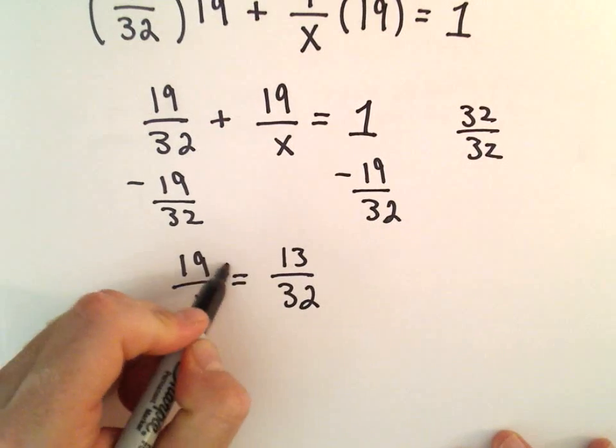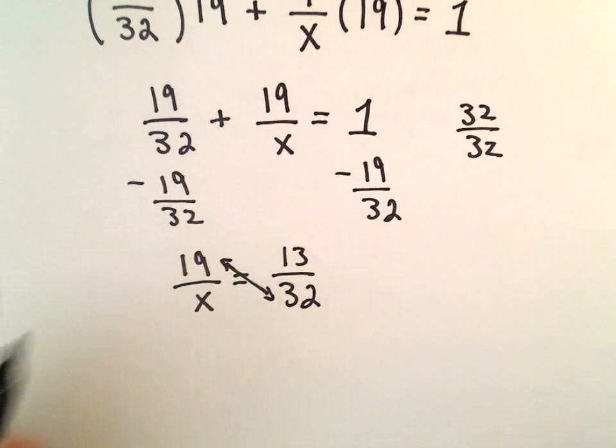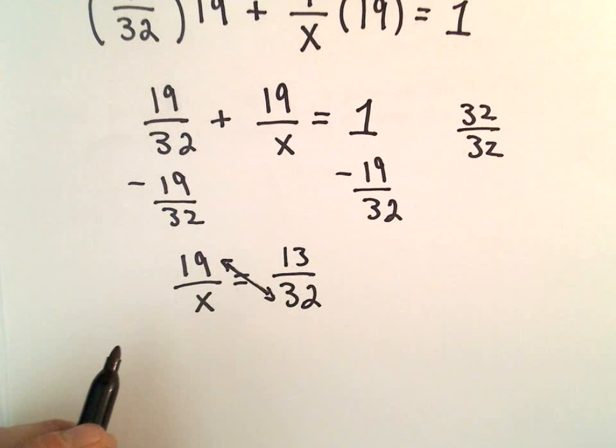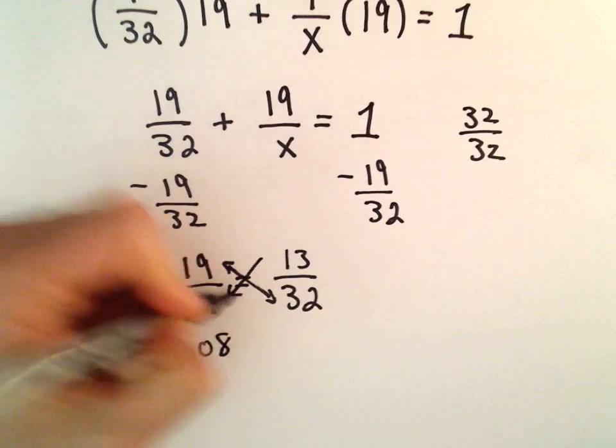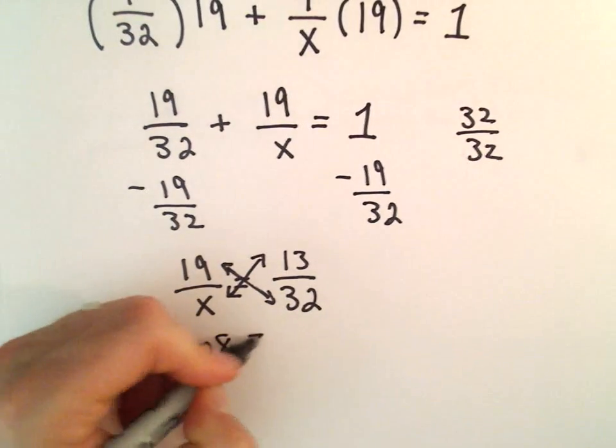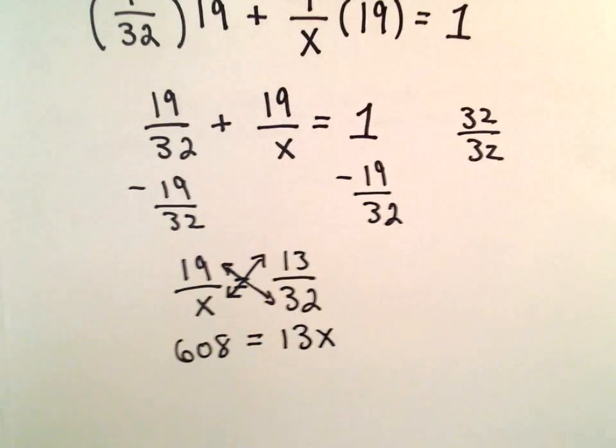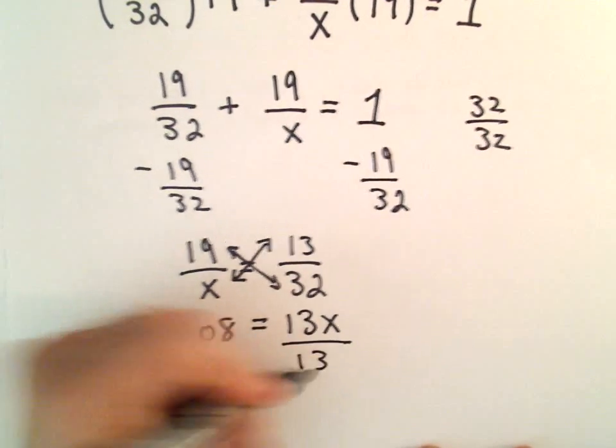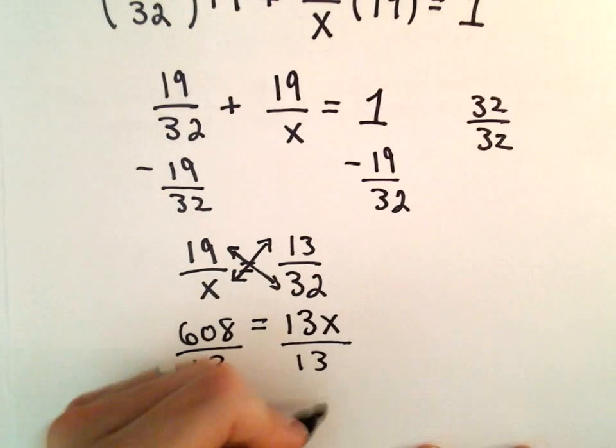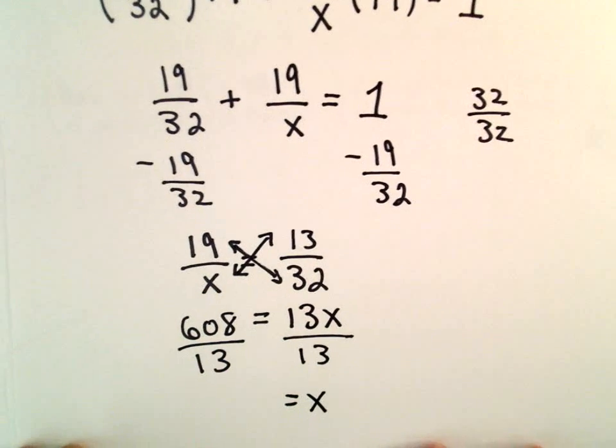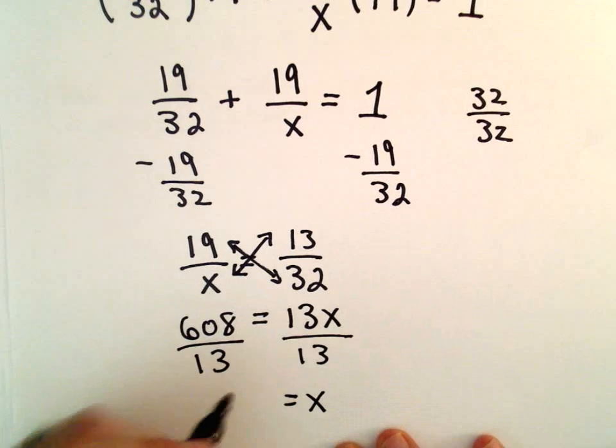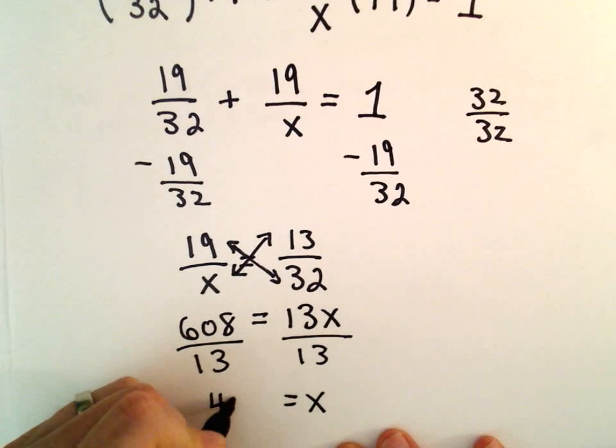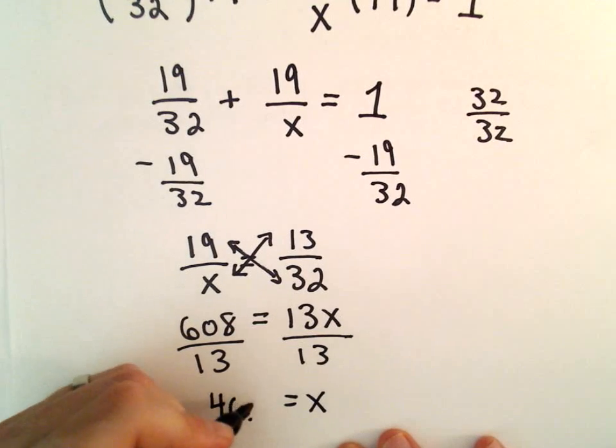And now what we're going to do is cross multiply. So I'm going to take 19 and multiply that by 32. So 19 times 32, that gives us 608. I'm going to multiply x times 13, which will give us 13x. And now simply let's divide both sides by 13. We'll be left with x on the right side. And 608 divided by 13, I'm getting this to be roughly 46.77.